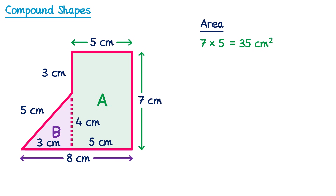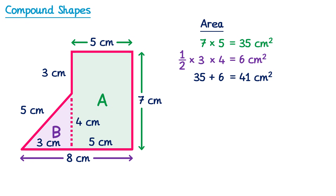We're now ready to work out the area of the triangle. We do one half multiplied by the base, which is 3, multiplied by the height, which is 4. One half times 3 times 4 gives 6 centimeters squared. So to find the total area of the shape we add 35 and 6, which makes a total of 41 centimeters squared.